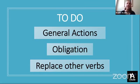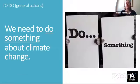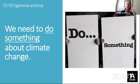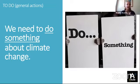For general actions, a sentence such as 'we need to do something about climate change' — it's not specific, it's not clear what we need to do, but we must do something. That's what I mean by general actions. Another example: 'I want to do something with John today' — it's general.